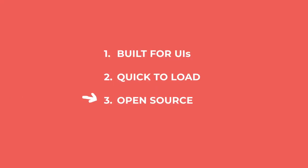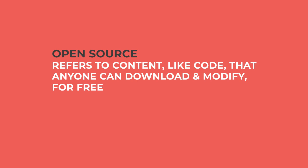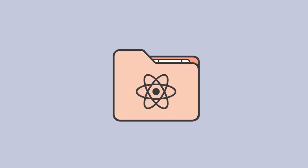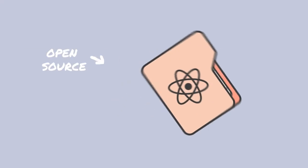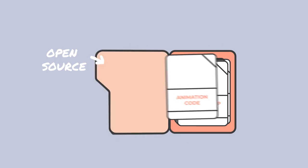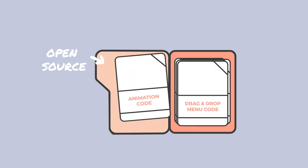That means users don't need to wait for their screen to completely reload every time they take an action. Third, React is open source. Open source refers to content like code that anyone can download and modify for free. Open source code is popular because it allows people to make improvements to the code, then share those improvements with the wide world. Because React is open source, you can quickly find libraries of code that allow you to easily add functionality to your code, such as a drag and drop menu, or even animations.